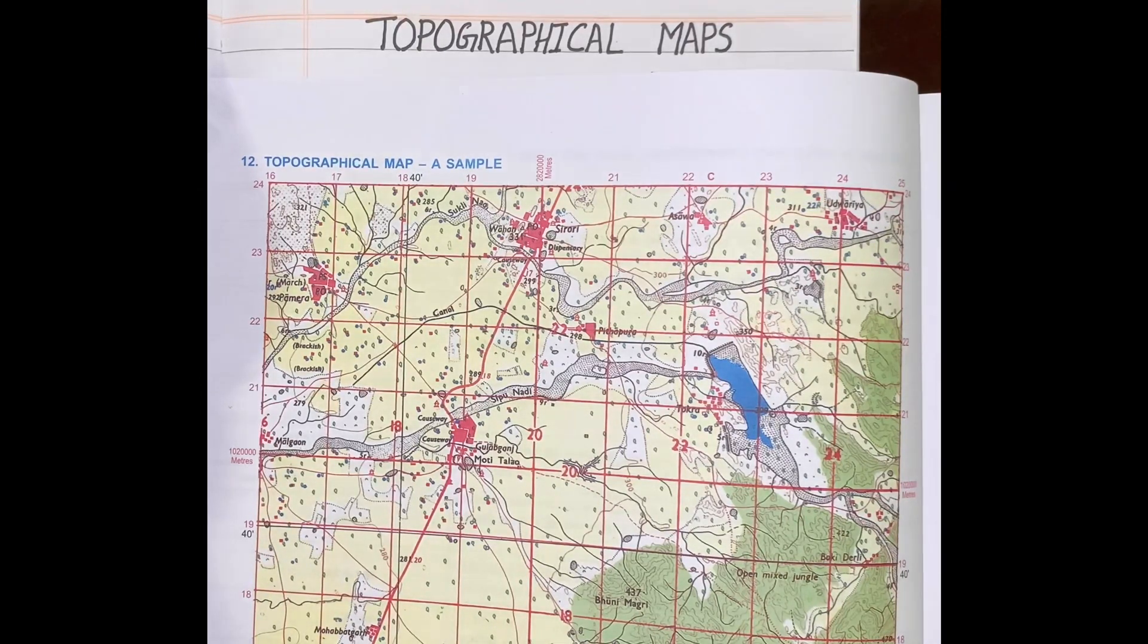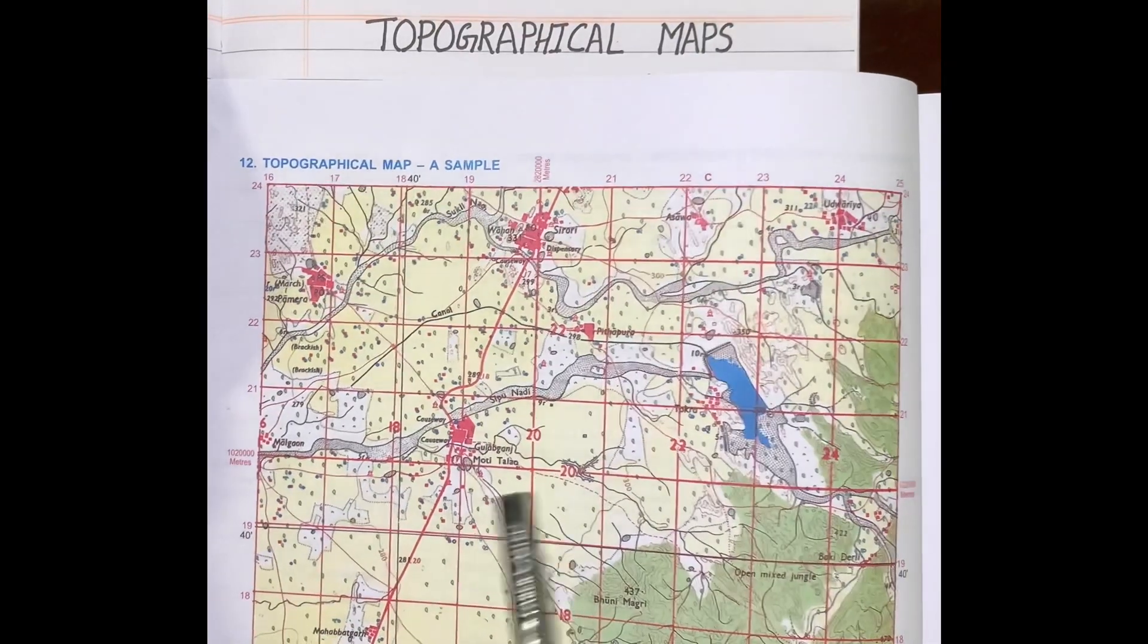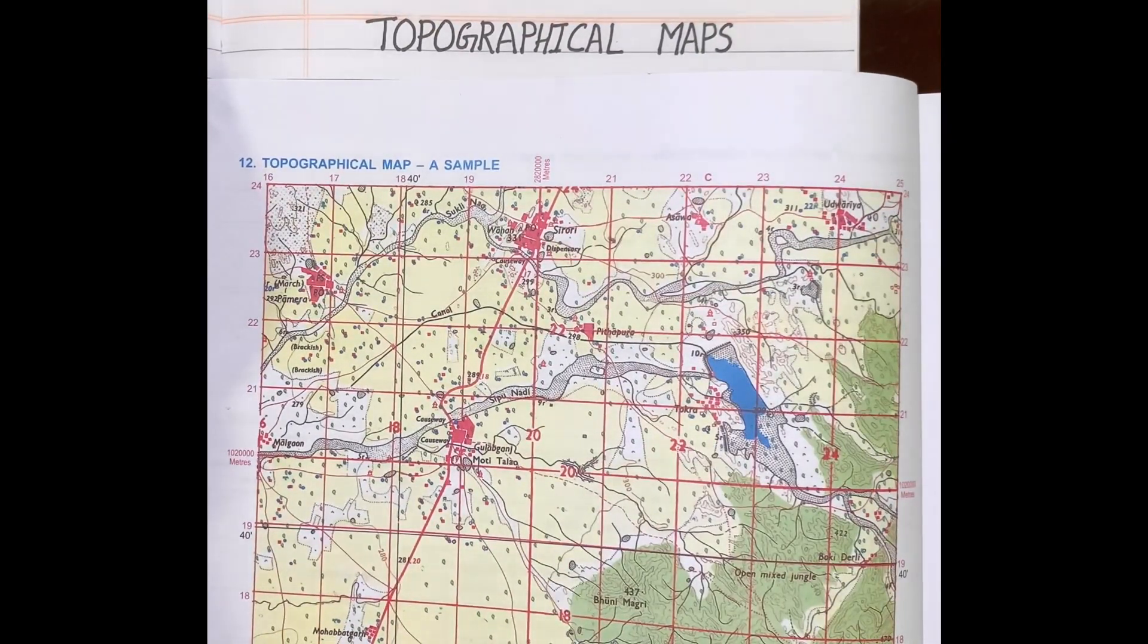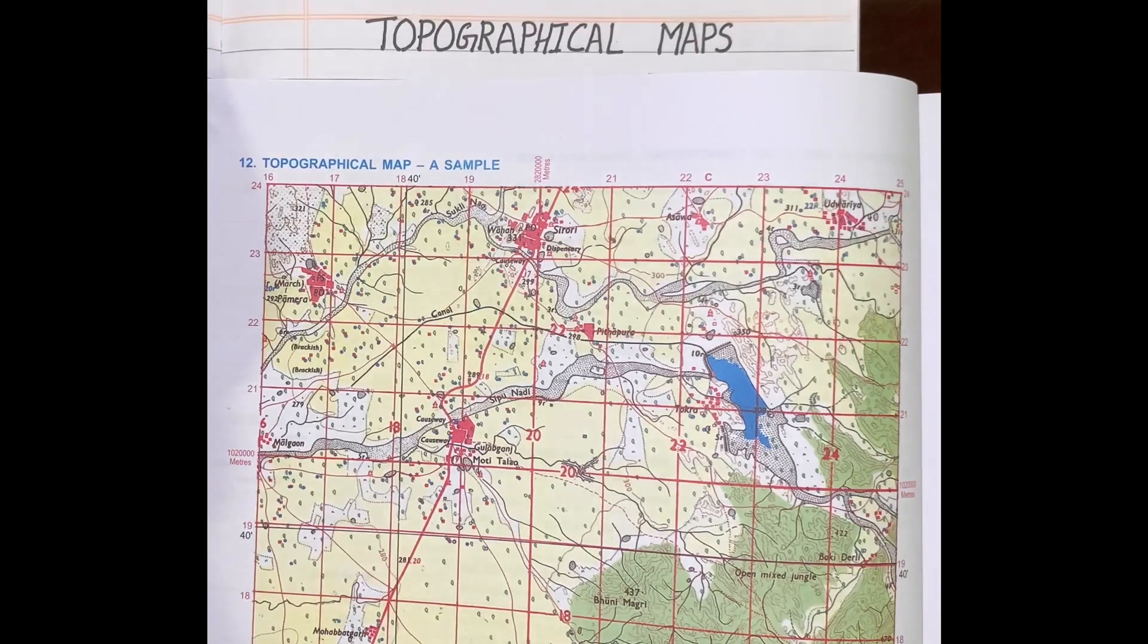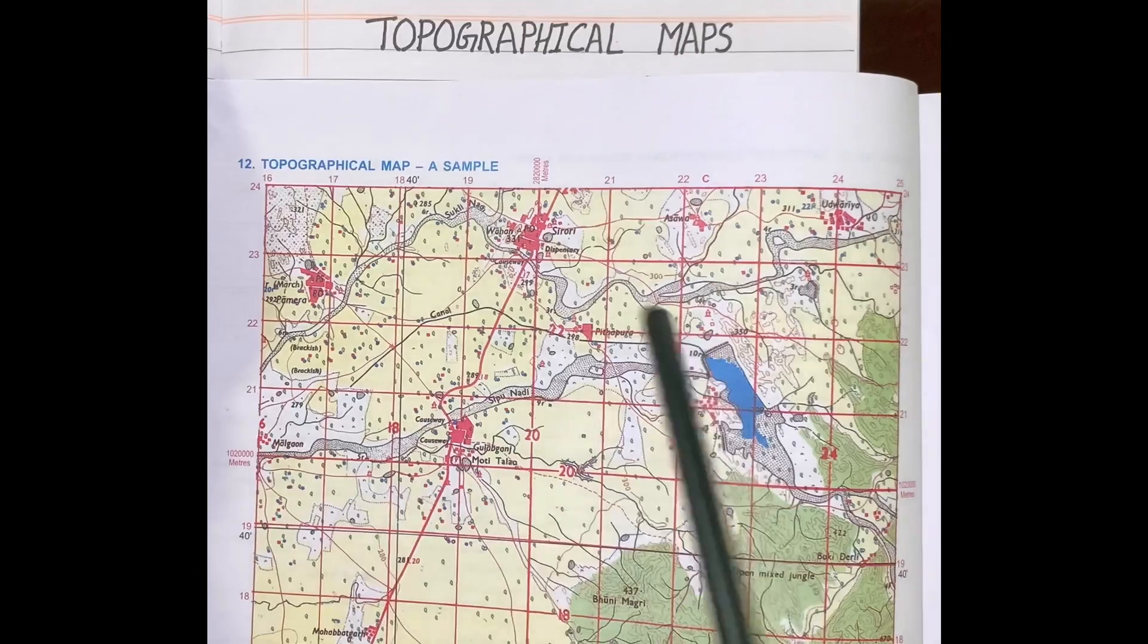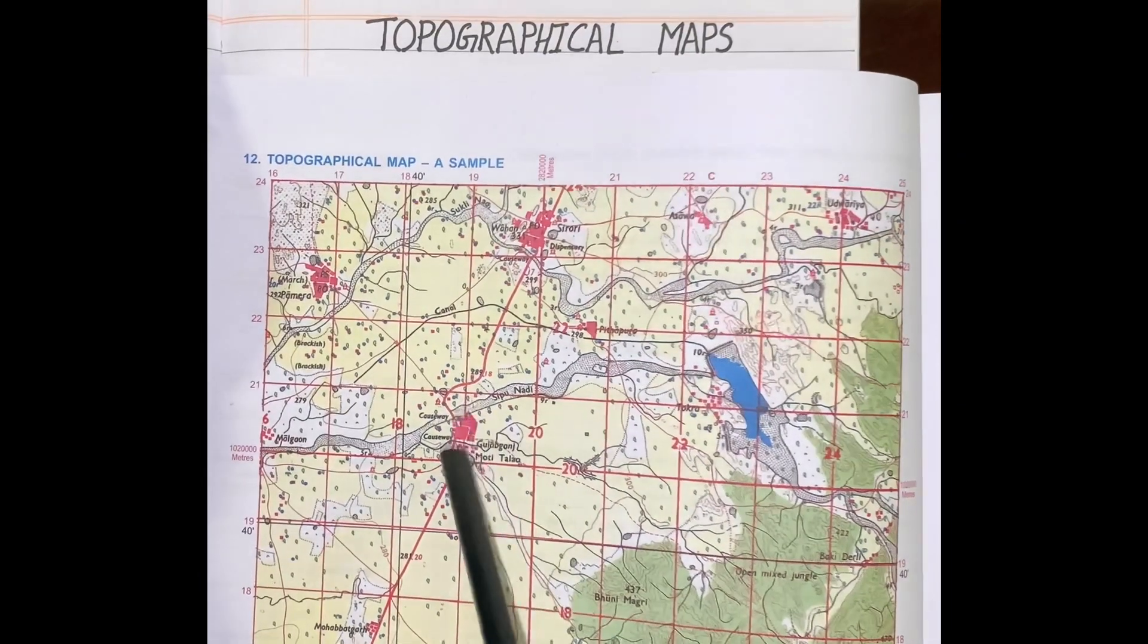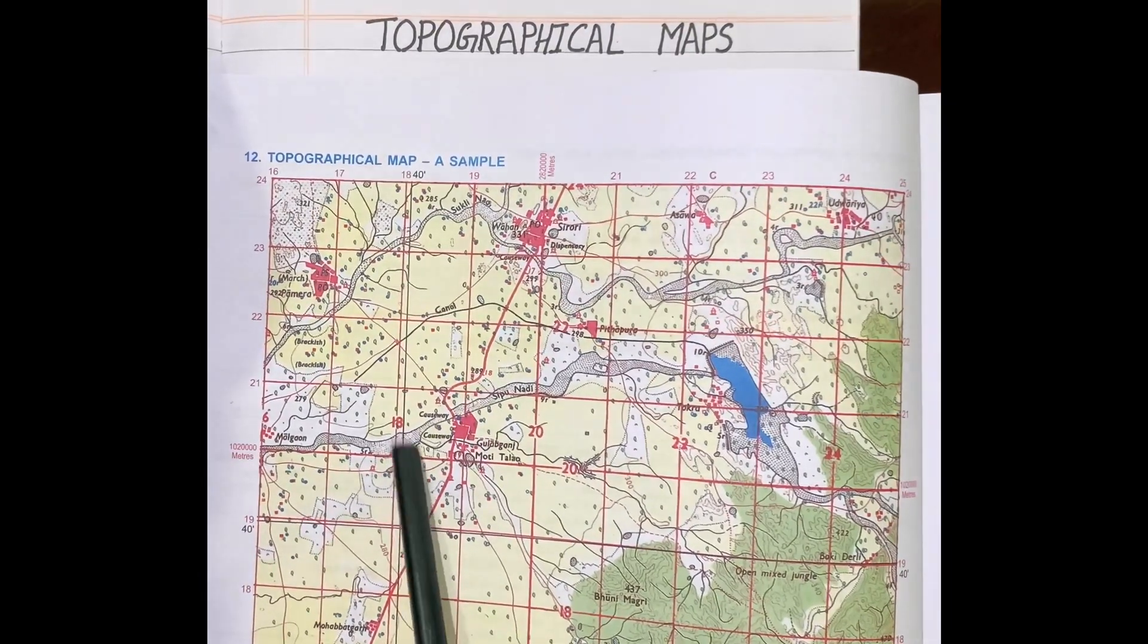Second, it is very useful for army personnel. Because army personnel navigate to unfamiliar places, they have to go to dangerous terrain, unknown places. They refer to this type of topographical map of that particular area where they are navigating.